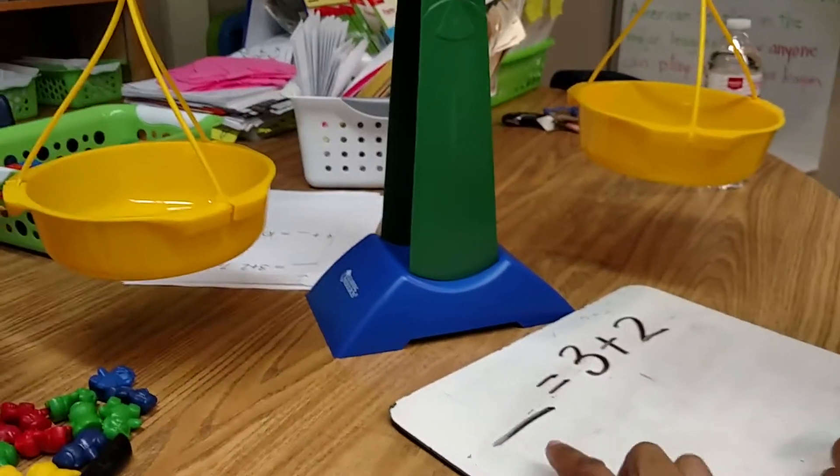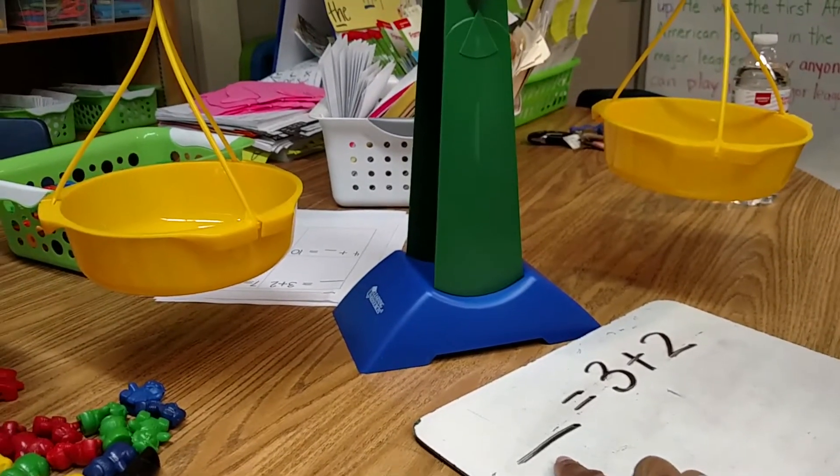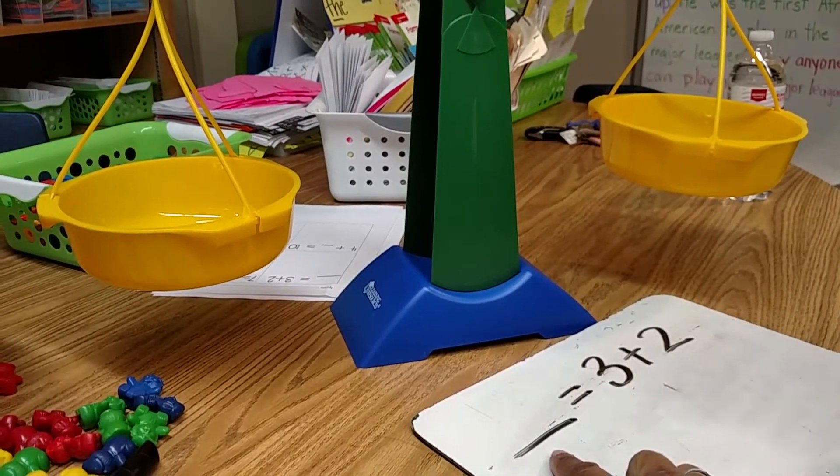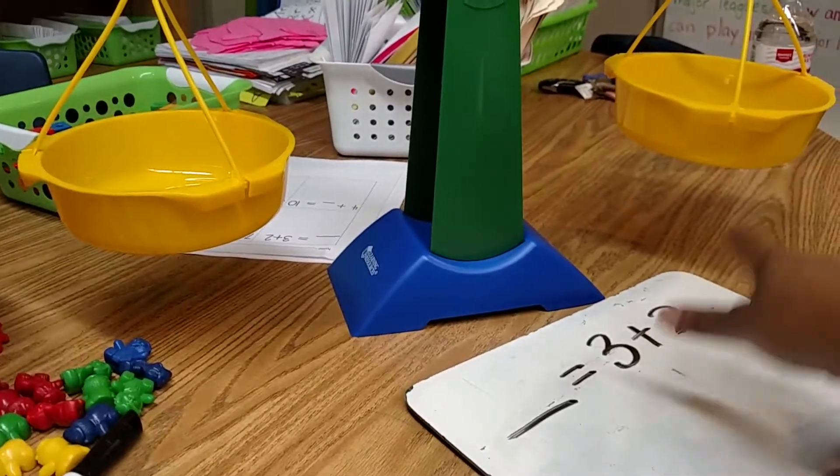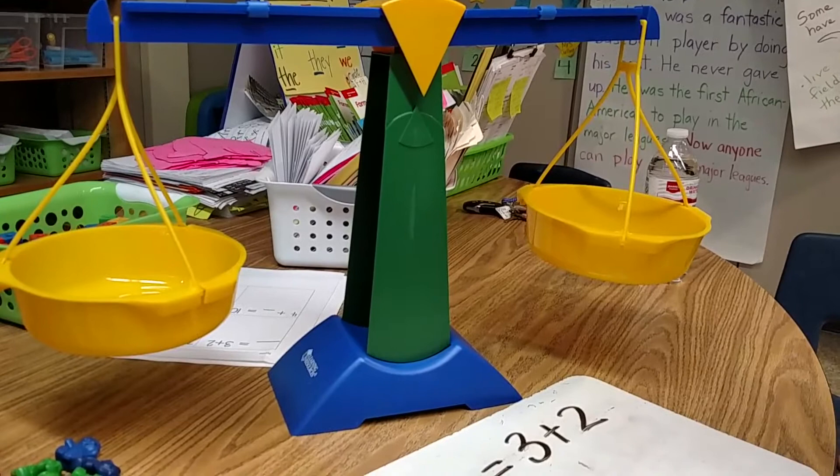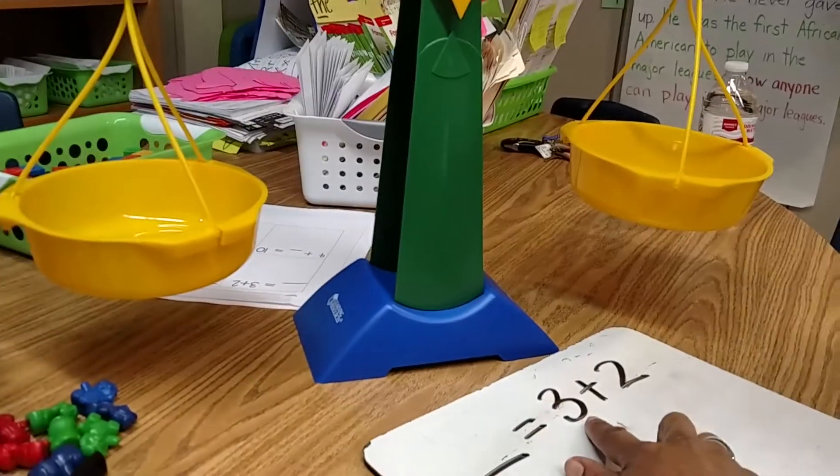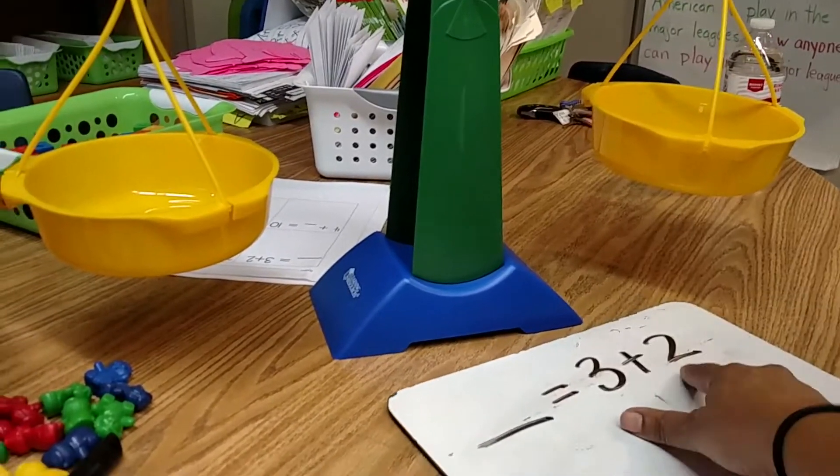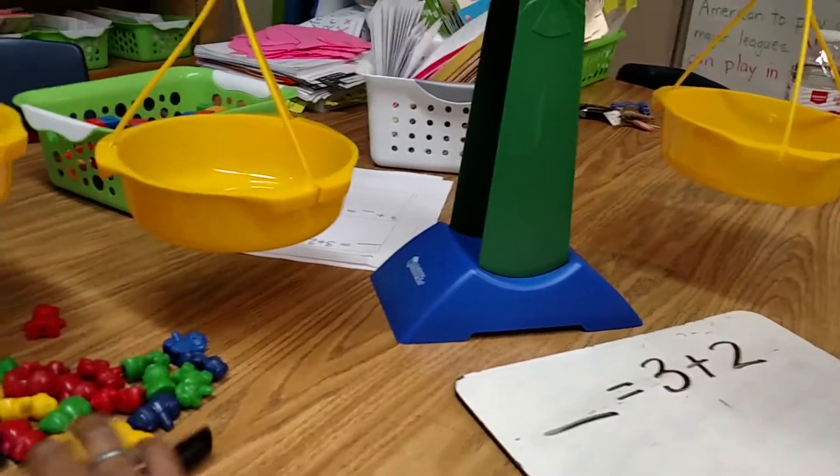So how many would be on this side of the scale right now? 0. Okay, and how many would be on that side of the balance scale? Just what number do you see there? And then, okay. Do you want to try that?